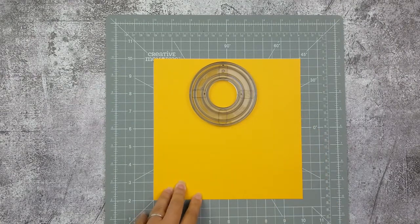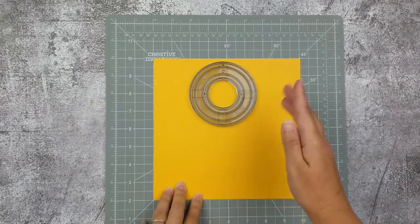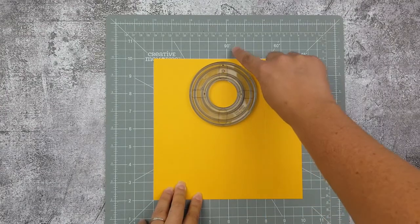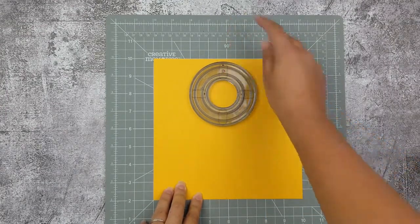Alright, so now I know that's where my circle needs to be that way. And then I'm going to make sure that this top black dot is lined up with the 90 degree mark or the 6 inch line.